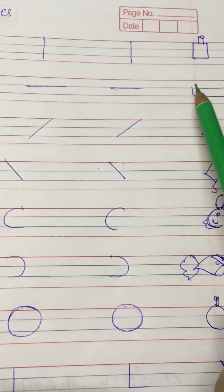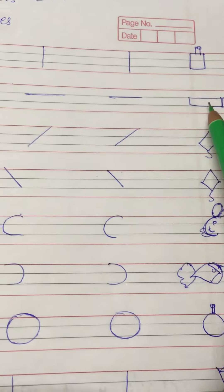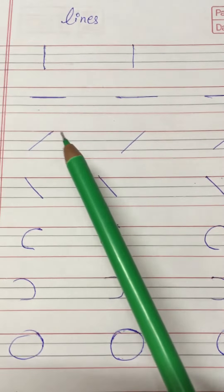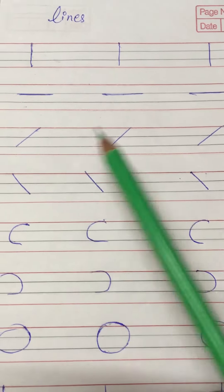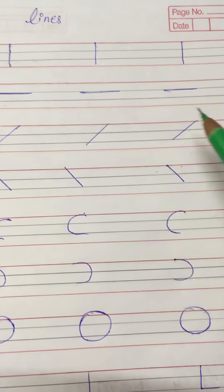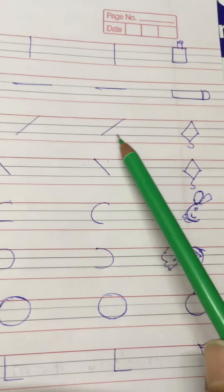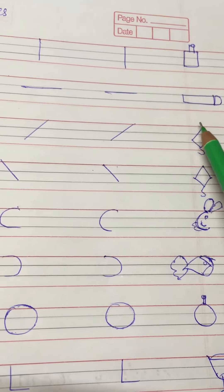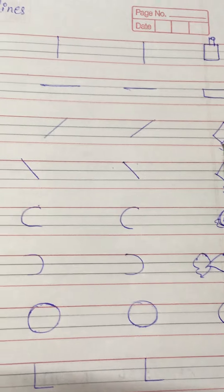Now this one is slanting line. Joh tedi rekha hoti hai usko hum slanting line bolte hai. Aur slanting line milane ke baad hamaari kya bhan gai - kite.